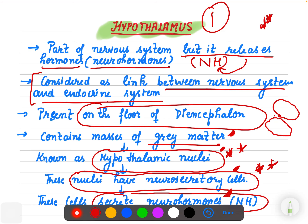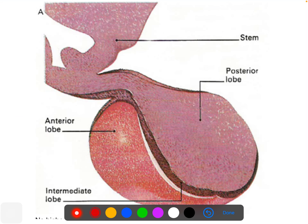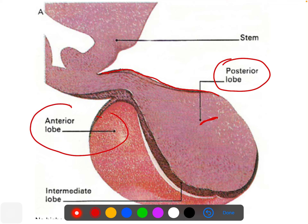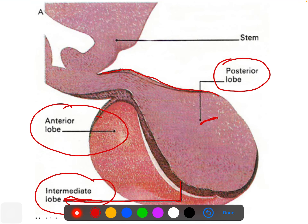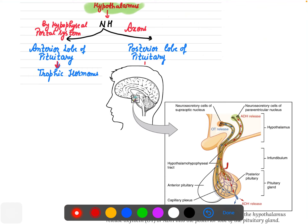The hypothalamus contains masses of gray matter known as hypothalamic nuclei. These nuclei contain neurosecretory cells, and it is these neurosecretory cells that secrete neurohormones. The pituitary gland has a posterior lobe, an anterior lobe, and an intermediate lobe, and we are now going to discuss the hormones released by each lobe.